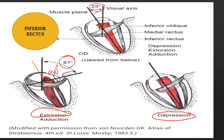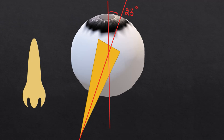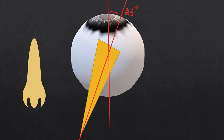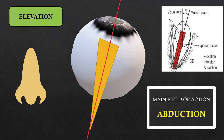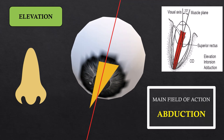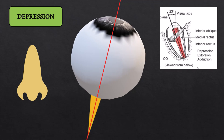Remember: superiors will always cause intorsion and inferiors will always cause extorsion. The superior rectus causes elevation and intorsion, the inferior rectus causes depression and extorsion. The superior rectus is causing intorsion and the inferior rectus is causing extorsion in their respective rotational positions.